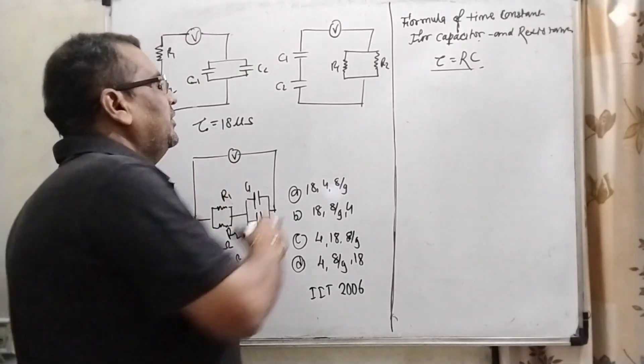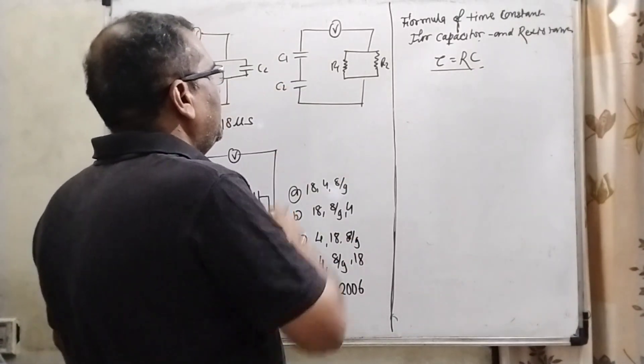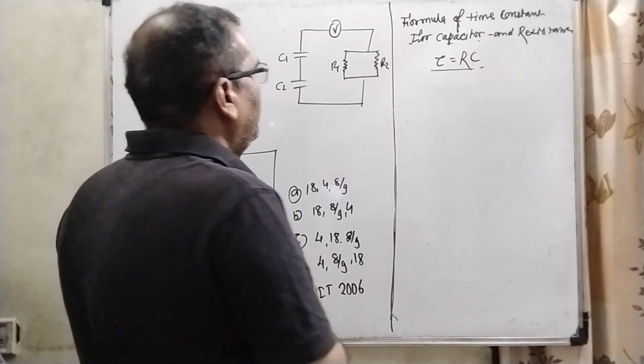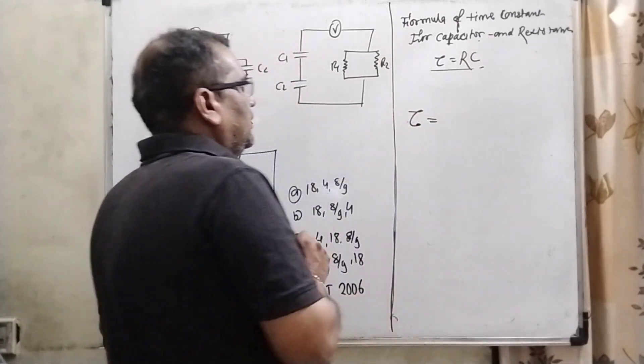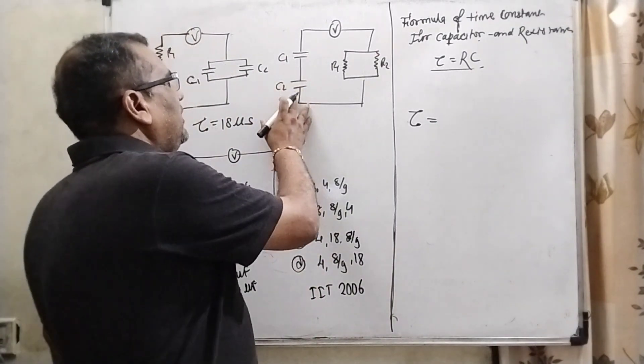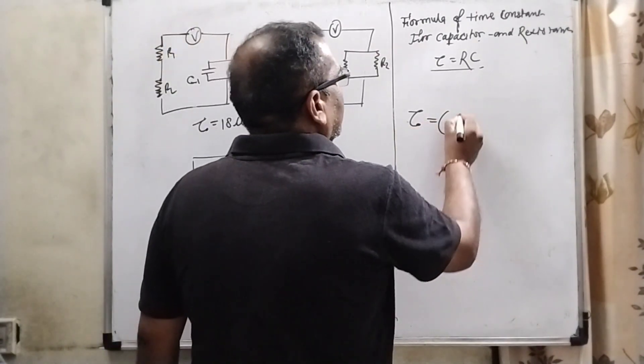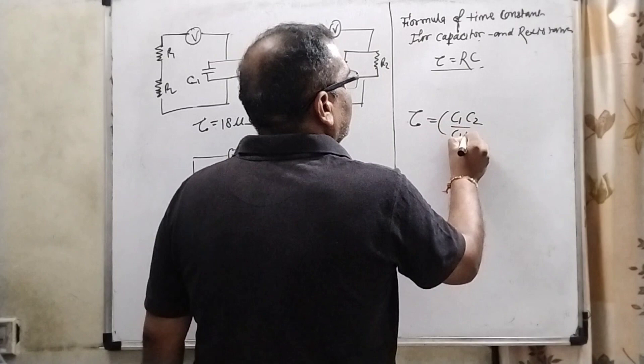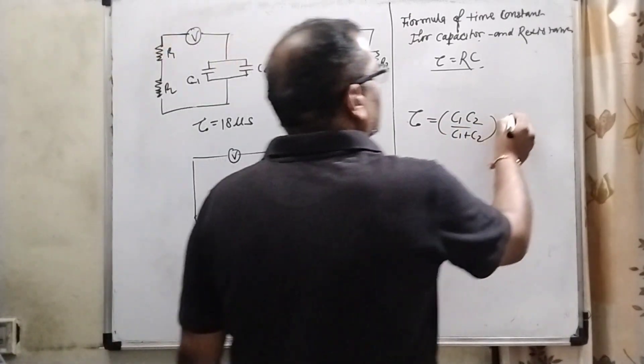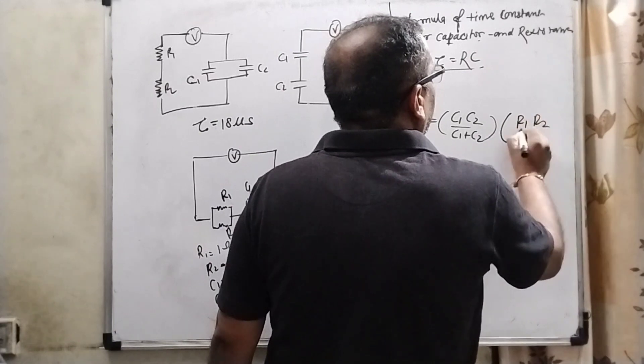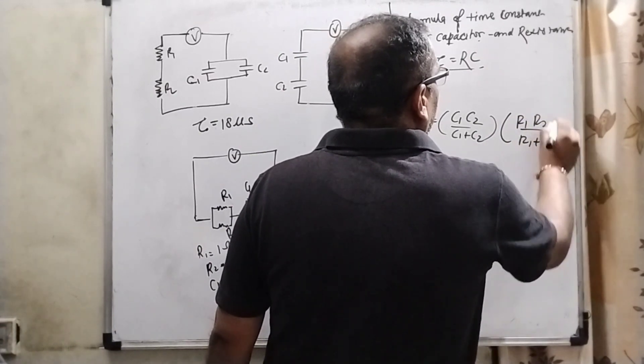For the second, you can see that here C1 and C2 are in series and R1, R2 are in parallel. So now we have to put tau equal to, when C1 and C2 are in series, that can be written as C1 C2 upon C1 plus C2. And here the resistance also in parallel, so it can be written as R1 R2, R1 plus R2.